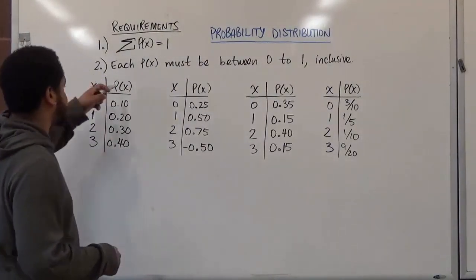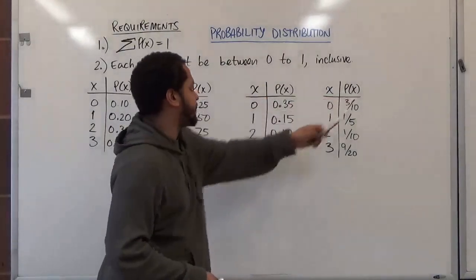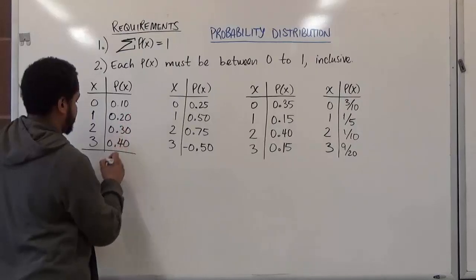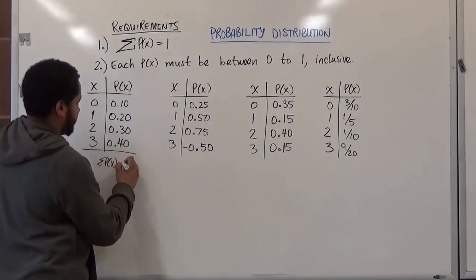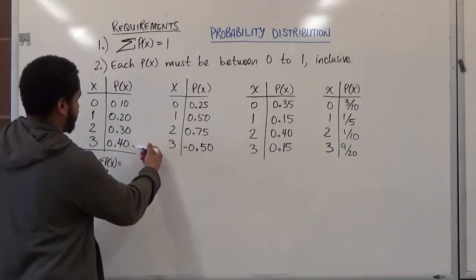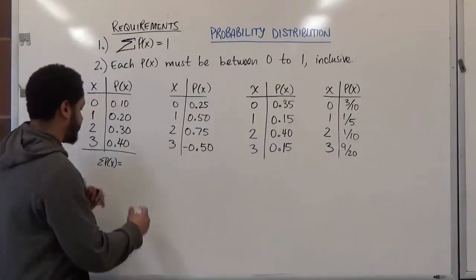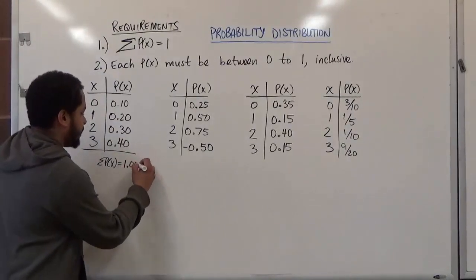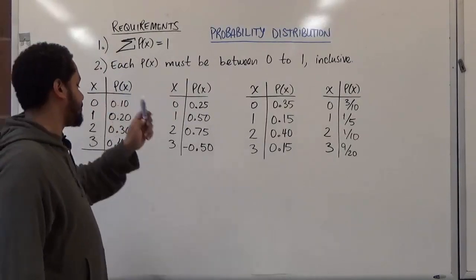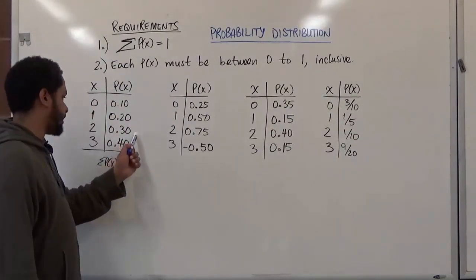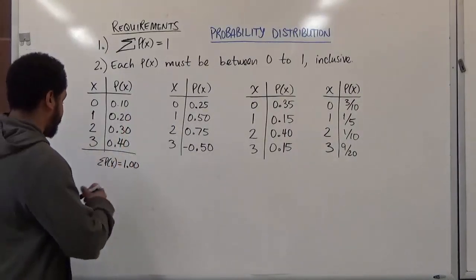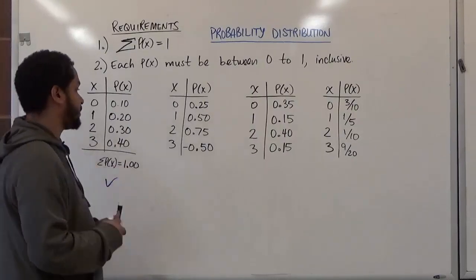To do this, we're going to take the sum of all the P(x) values. For the first distribution, the sum of P(x) is 0.1 plus 0.2 plus 0.3 plus 0.4, which gives us 1.0. The first requirement is satisfied. The second requirement — each probability must be between 0 and 1 inclusively — is also satisfied since no value is less than 0 or greater than 1. So we're good with the first probability distribution.